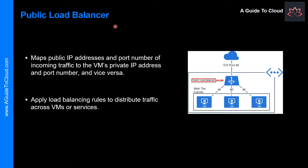There are two types of load balancers: public and internal. A public load balancer maps the public IP address and port number of incoming traffic to the private IP address and port numbers of the VM, and vice versa for response traffic. By applying load balancing rules, you can distribute specific types of traffic across multiple VMs or services. For example, you can spread incoming web traffic across multiple web servers. Azure load balancer distributes the requests across three VMs in the load balanced set.